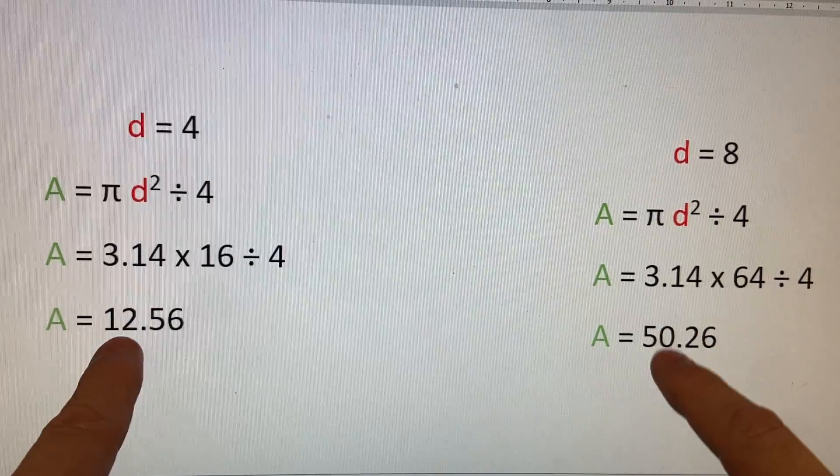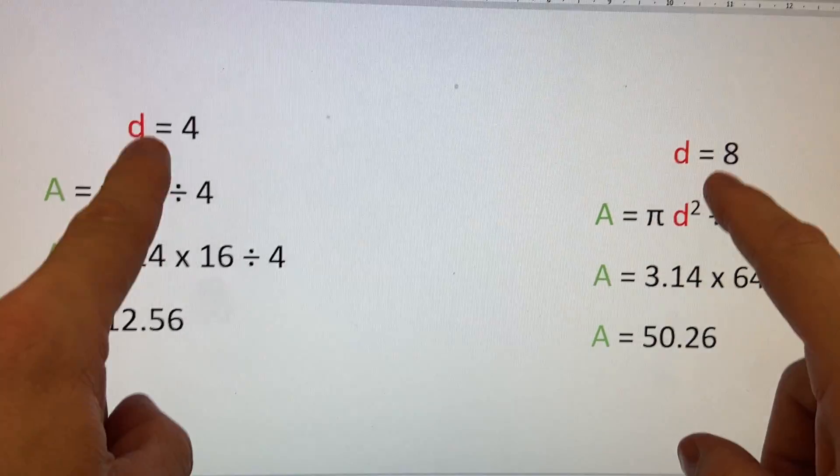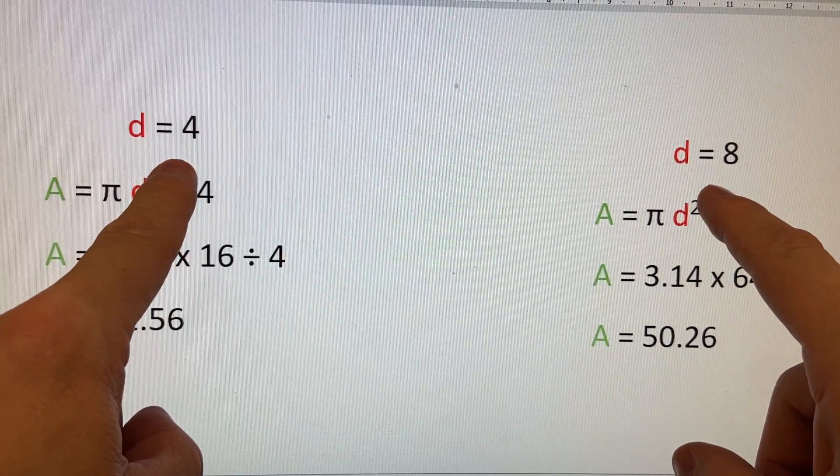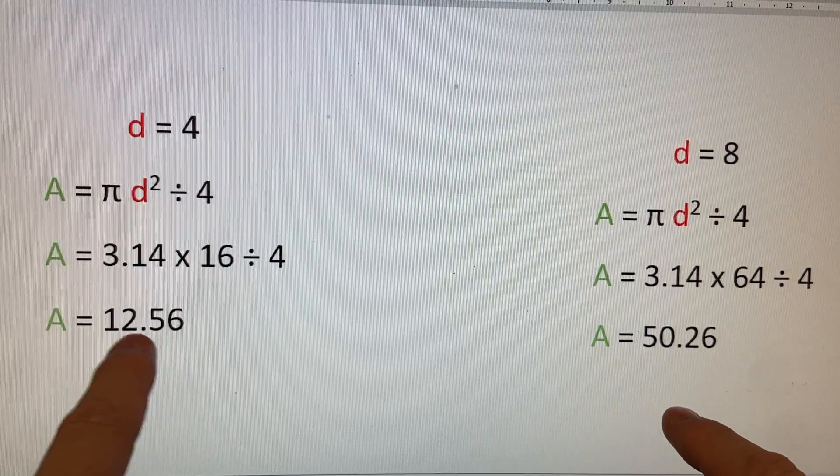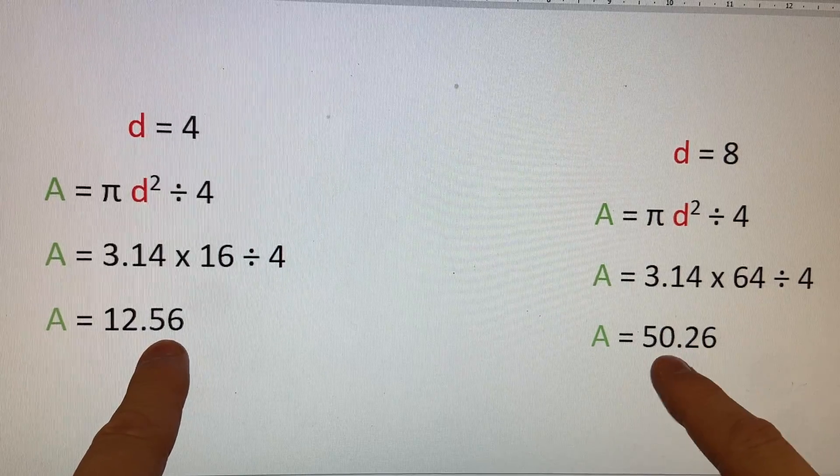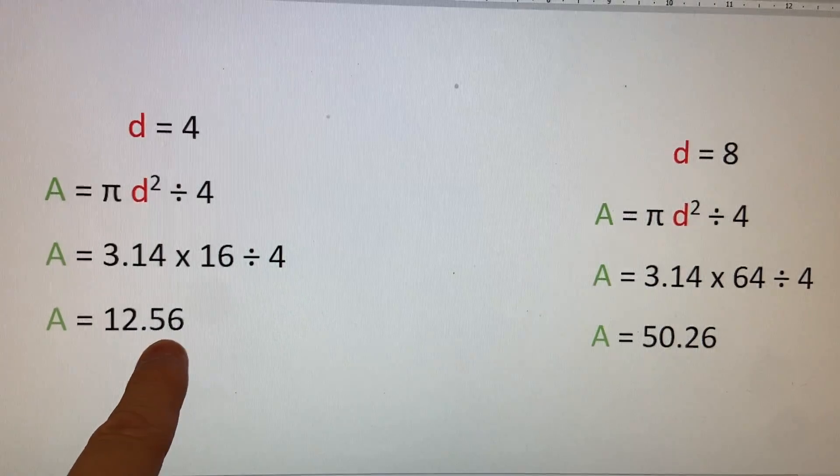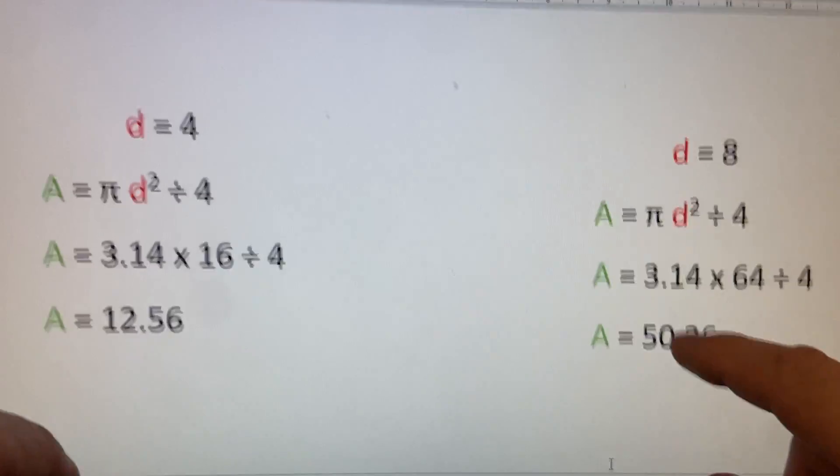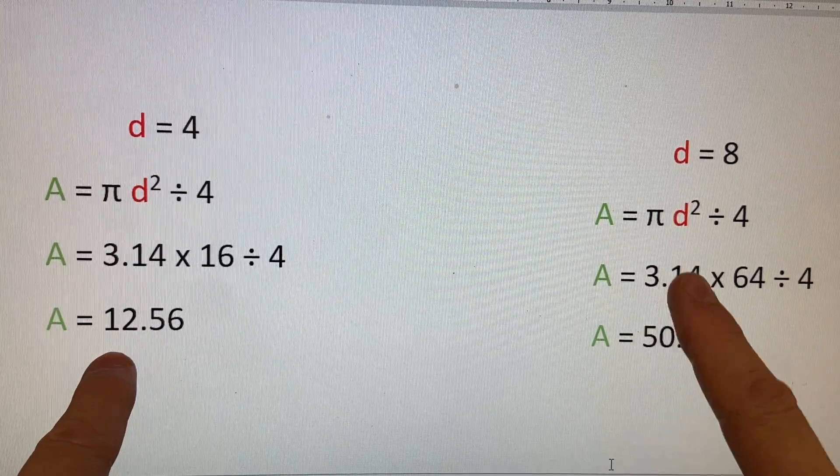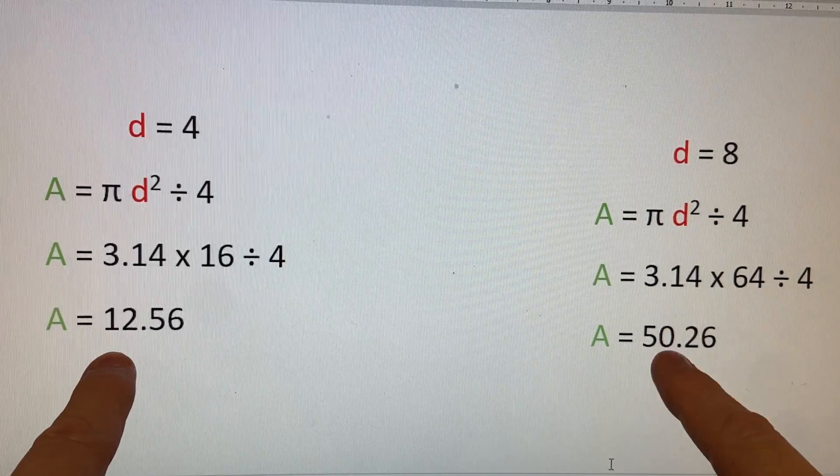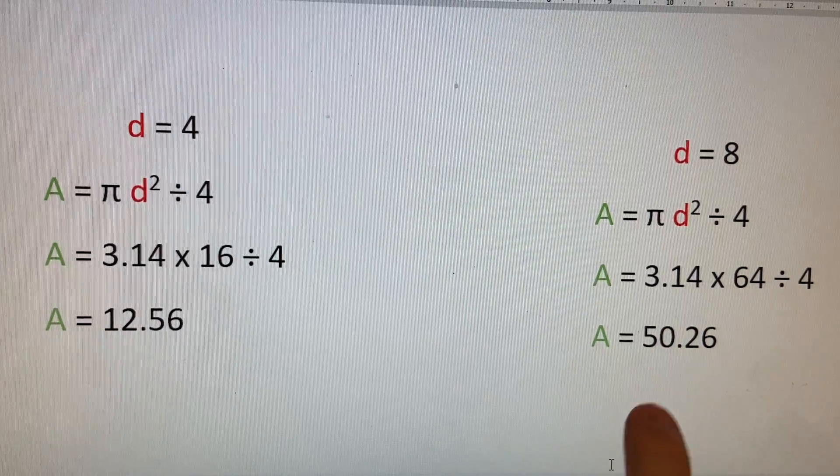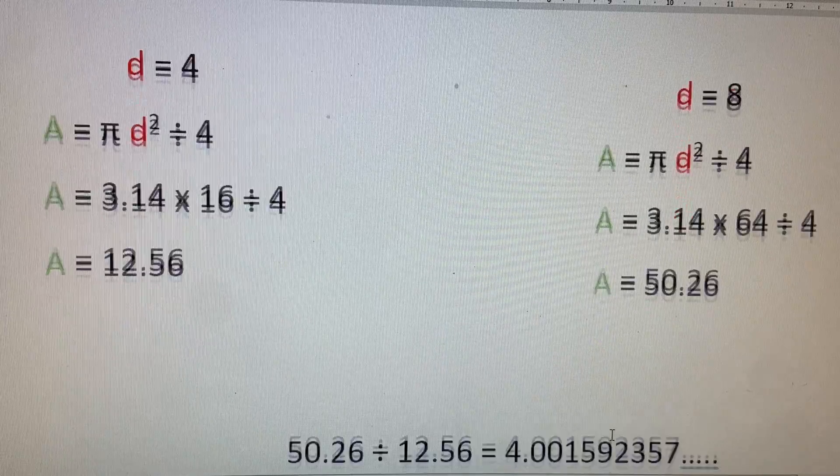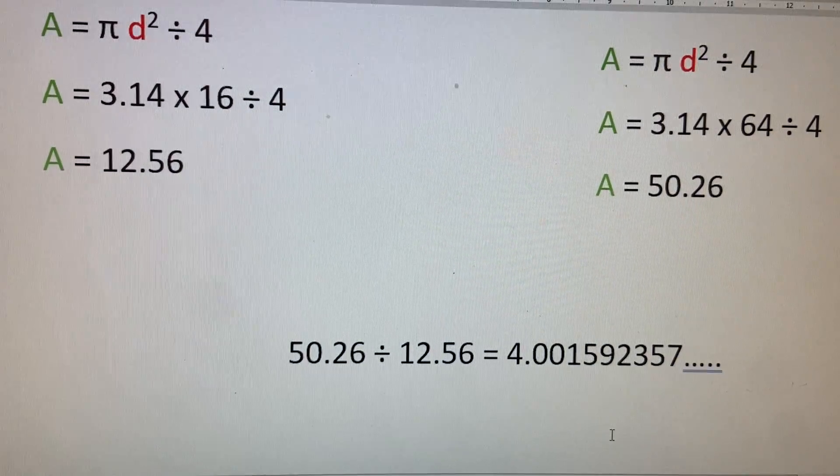And then there is division by 4 and those are your final answers. Obviously one is not double of another even though the diameter is doubled. So if this is 12 point something this should be 24 point something or 25 whatever. It's not. So how many of these fit into how many of these or one of these.